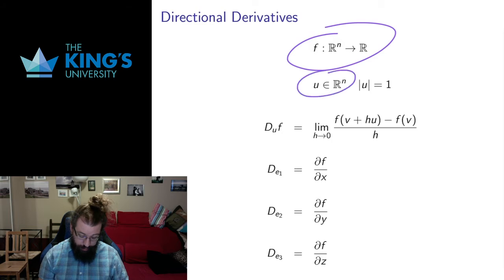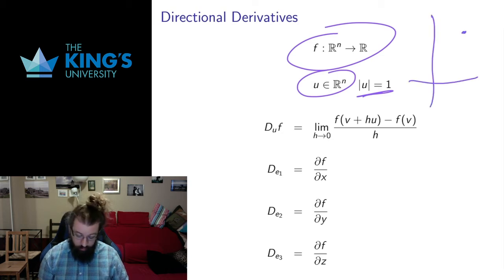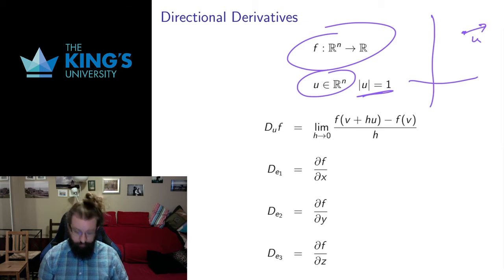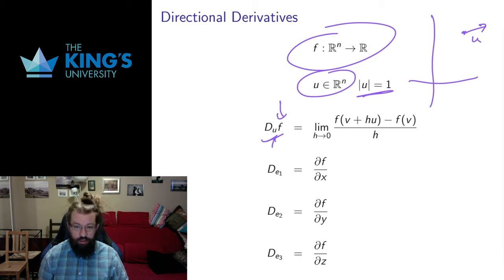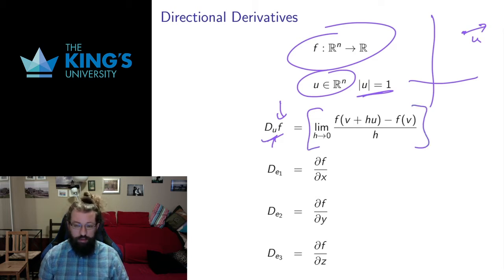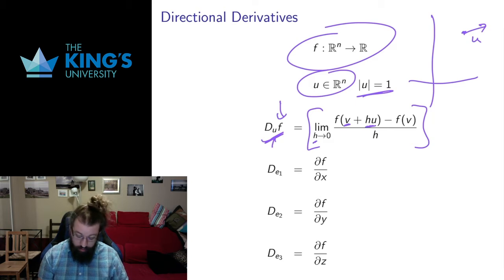Say I have a scalar field and I have a vector of length 1 — a unit vector. We use unit vectors to indicate direction, so this vector u can indicate direction. We think of these as local directions: I have some point and a vector of length 1 as a local direction vector starting from that point. I can ask for the rate of change of the scalar field f in the direction u. The notation is D subscript u, and this is given by a limit definition — we evaluate at some point v, move in the direction u by a little bit, and take the limit as that movement goes to zero. That gives us the infinitesimal rate of change if we move infinitesimally in the u direction.